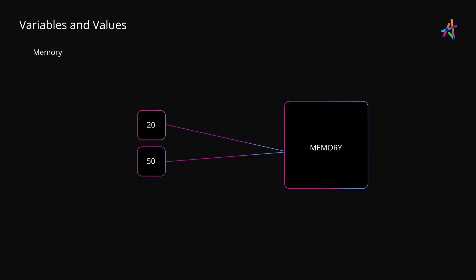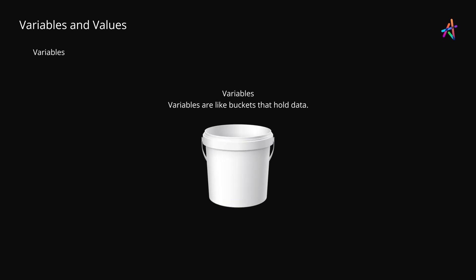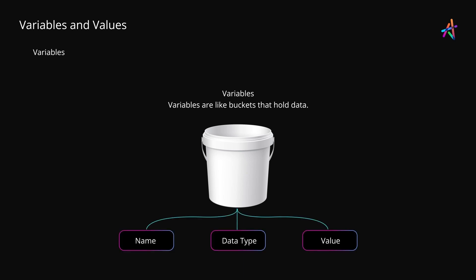Inside a computer program, before data is processed it needs to be stored in the computer's memory. One of the ways we can do this is by using variables. You can think of a variable as a bucket or a container for holding data. This bucket has a name, a data type so that we know what type of data it holds, and the data itself. The data that this bucket holds is known as a value, so a variable holds a value.